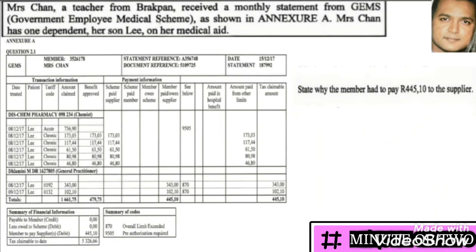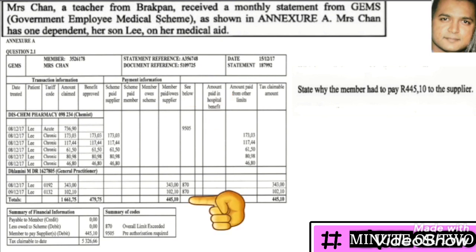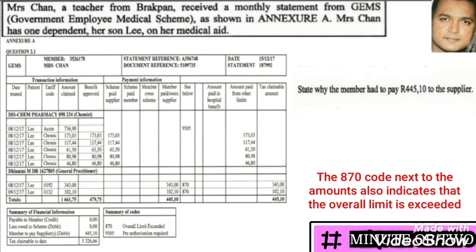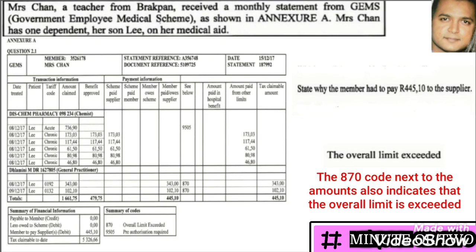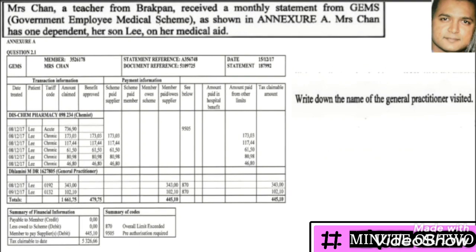The next question asks why the member had to pay 445.10 to the supplier. Looking at the document, you'll find a heading called 'Member Paid to Supplier' and at the bottom of that column is the amount of 445.10. This occurs when the medical aid is exhausted — the medical aid pays up to a certain amount, and any additional cost the member must pay. The only logical answer is that the overall limit has been exceeded.